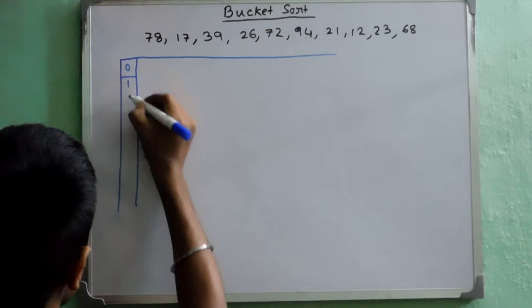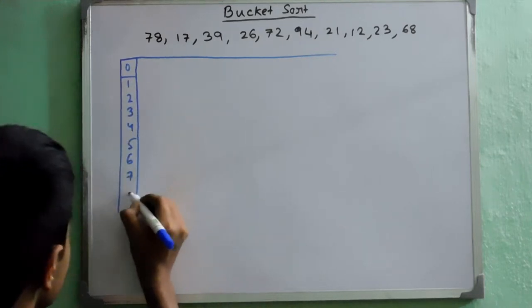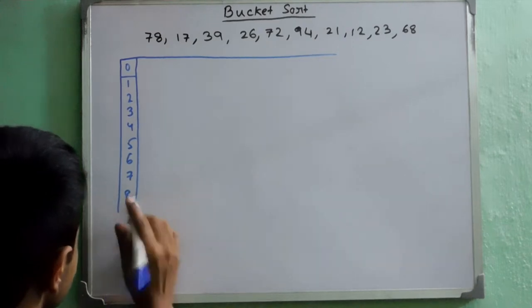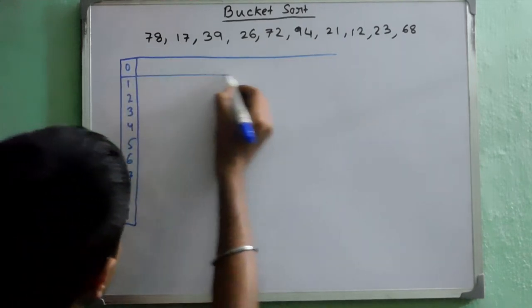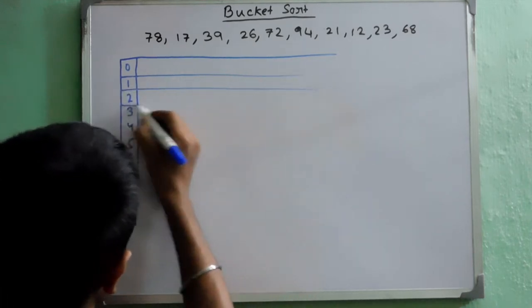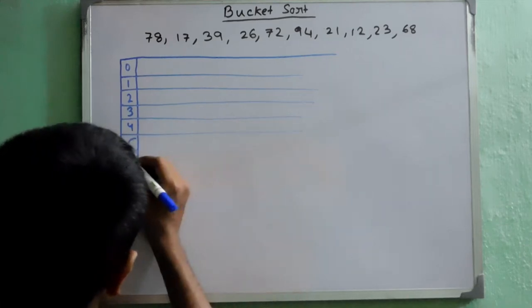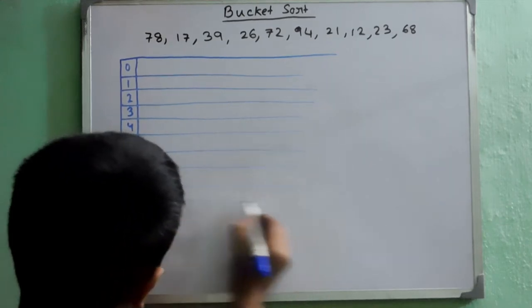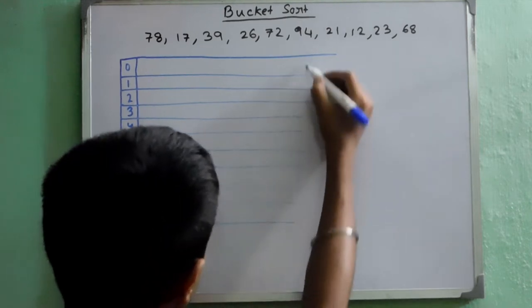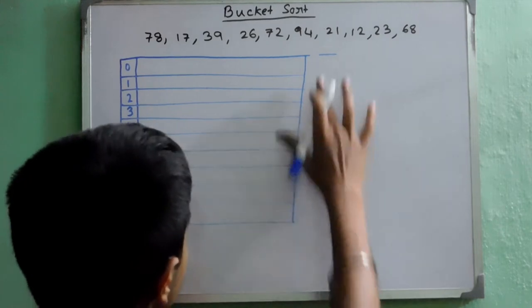So 0, 1, 2, 3, 4, 5, 6, 7, 8, 9. So 1st bucket, 2nd bucket, 3rd bucket, 4th bucket, 5th, 6th, 7th, 8th, 9th and the last one. So this is our buckets.